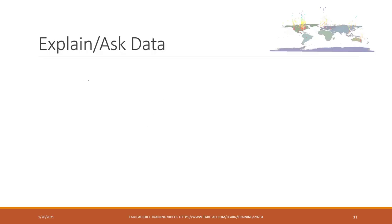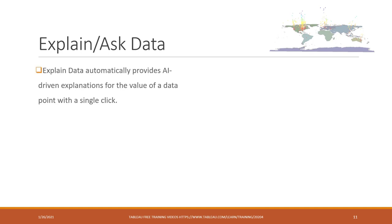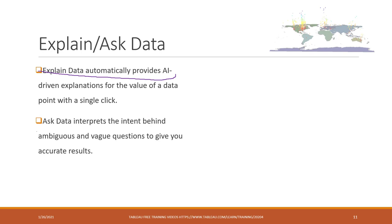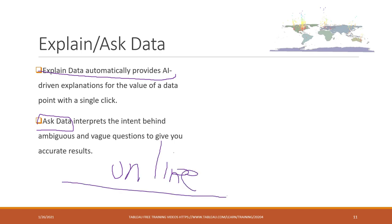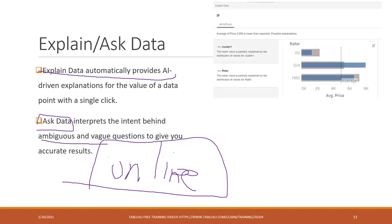Finally, I want to introduce two very cool functions. One is called Explain Data — it automatically provides AI-driven explanations for the value of a data point with a single click. The other is Ask Data, which is available on Tableau Online and allows you to ask questions, and based on the questions it provides creative visualizations to answer them. This is an example of using Explain Data in Tableau Desktop and also Tableau Online.